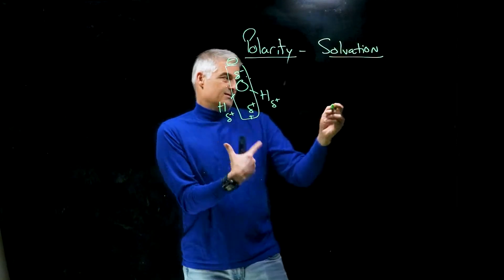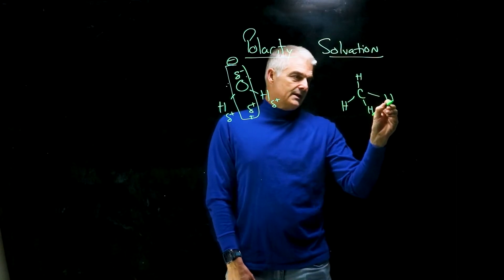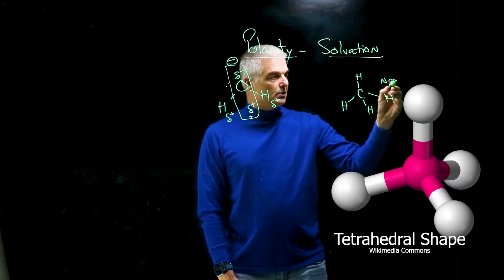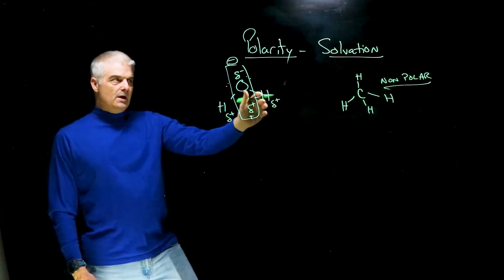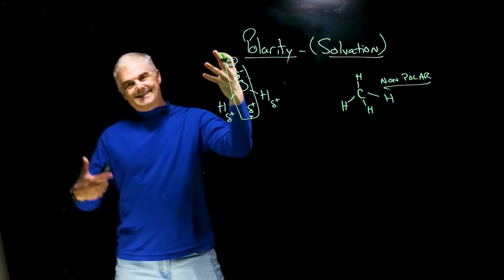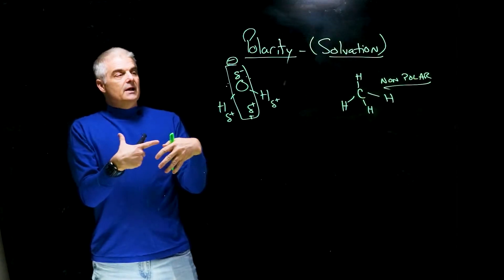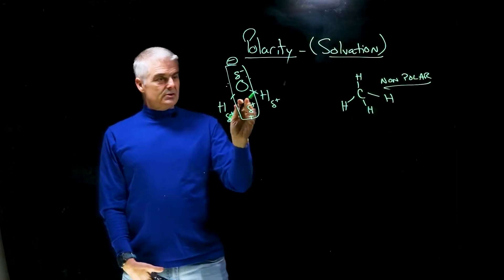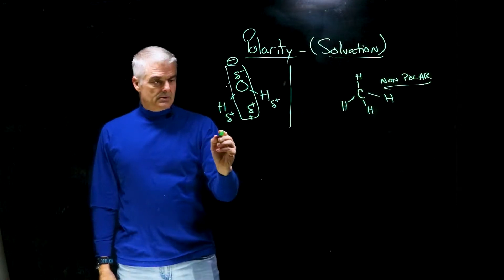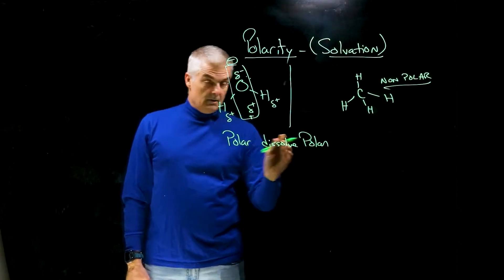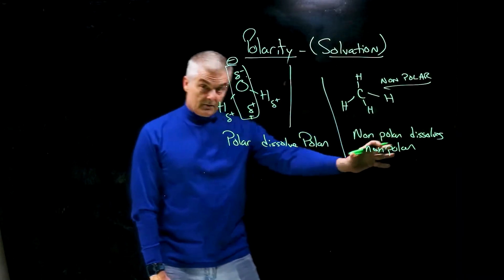Nonpolar molecules are ones that don't have that charge separation. For example, methane — CH4 — has a tetrahedral shape; this is nonpolar. So there's polar molecules and then there's nonpolar molecules. And we want to talk about how that relates to things that dissolve in other things, because when they're dissolving, they're mixing. There's a very interesting thing we say: polar molecules dissolve polar molecules, and nonpolar dissolves nonpolar.